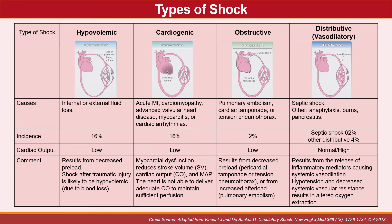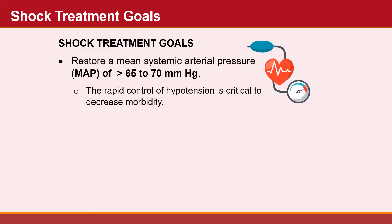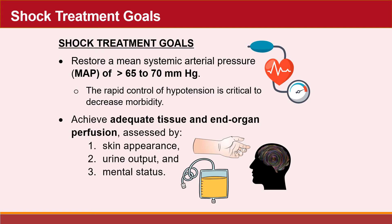Here is the complete table describing the different types of shock. The main goals when treating shock are: first, to restore a mean arterial pressure of greater than 65 to 70 mmHg, since rapid control of hypotension is critical to decrease morbidity; and second, to achieve adequate tissue and end-organ perfusion, assessed by skin appearance, urine output, and mental status.